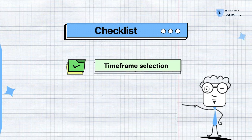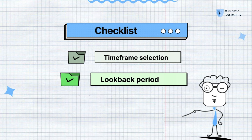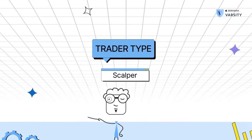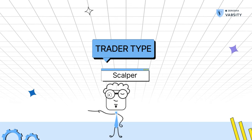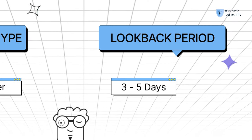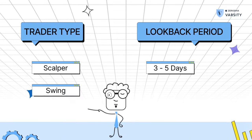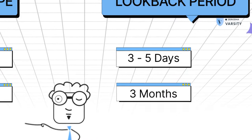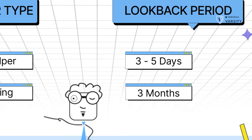The next thing is the look-back period — how long you want to look back in the past to base your decisions on today. For example, if you're a scalper using the one-minute or five-minute chart to enter and exit very quickly, you might want to look back say five days or three days of data. If you are a swing trader looking at the daily charts, you might want to look back up to three months.